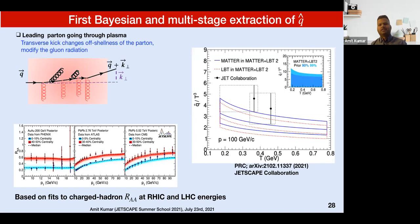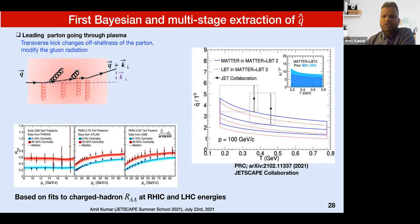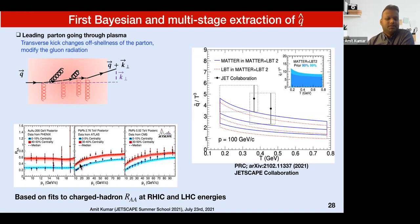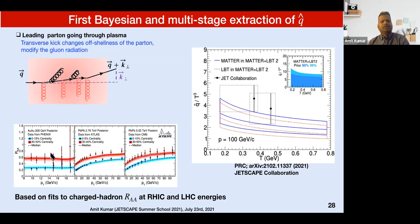This quantity has also been extracted within the JetScape collaboration using a Bayesian multi-stage approach. Shown here is Q-hat over T-cubed, which is a dimensionless quantity, as a function of temperature. These plots represent fits to the experimental data for charged hadron R_AA at RHIC for most central and semi-peripheral collisions.